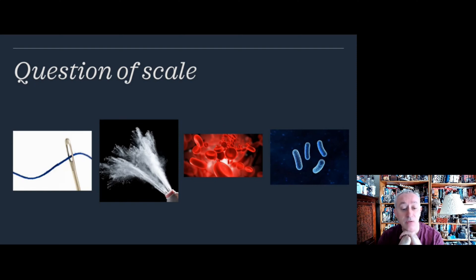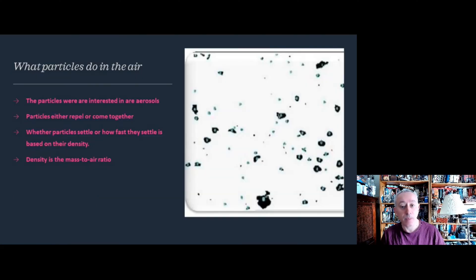Talcum powder granules are about 10 microns in size. Red blood cells are about six microns in diameter, whereas bacteria are one micron or even smaller. You get a sense of scale going from left to right, and then what particles actually do in the air.